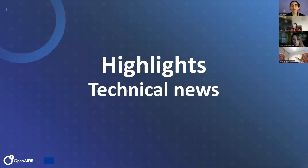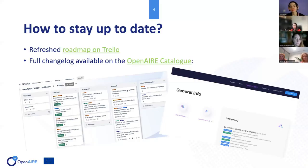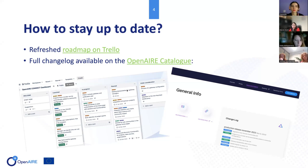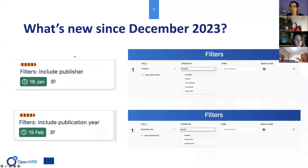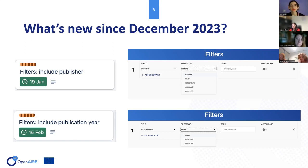Some technical news since December. First of all, you can always stay up to date on what's happening from the technical point of view of OpenAIR Connect by going to our brand new roadmap on Trello. You will also see all the changes in the OpenAIR Catalog of the OpenAIR Connect service. Since December, which was when we had the previous community call, we included two new filters for selecting the research products for your gateway: the publisher field and the publication year.